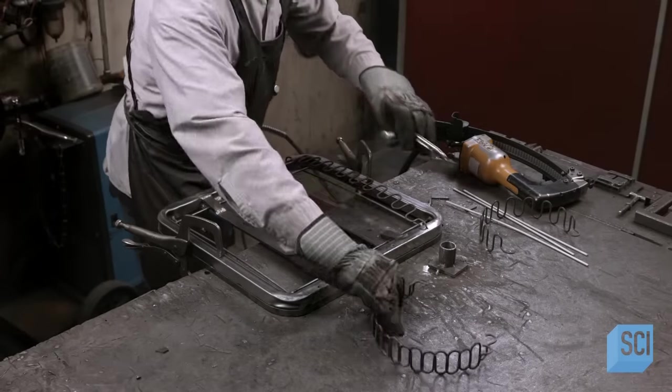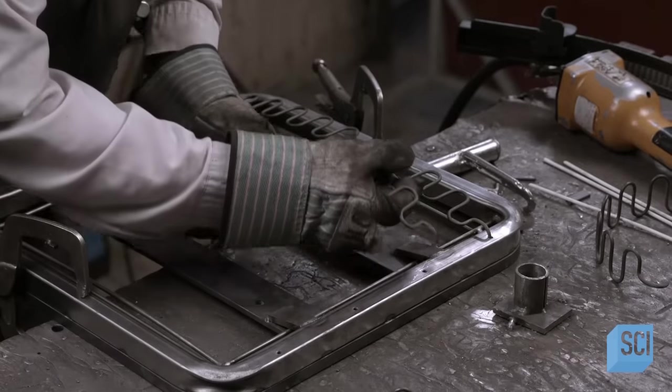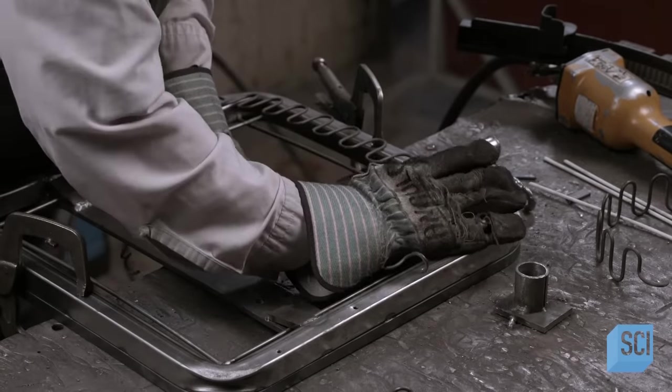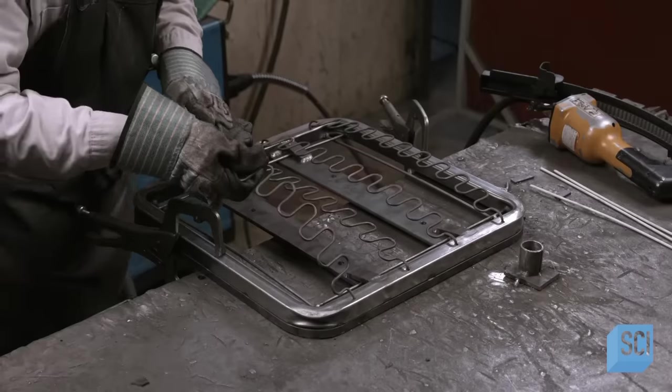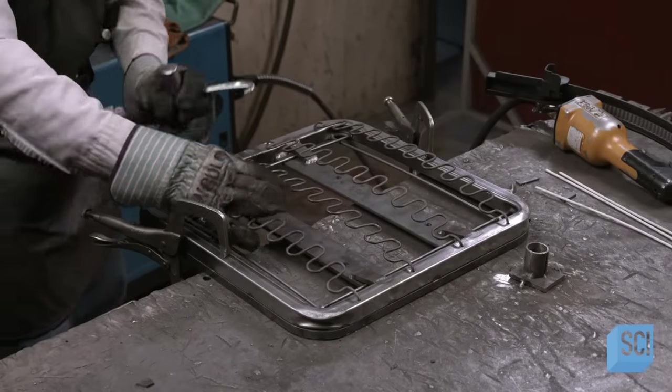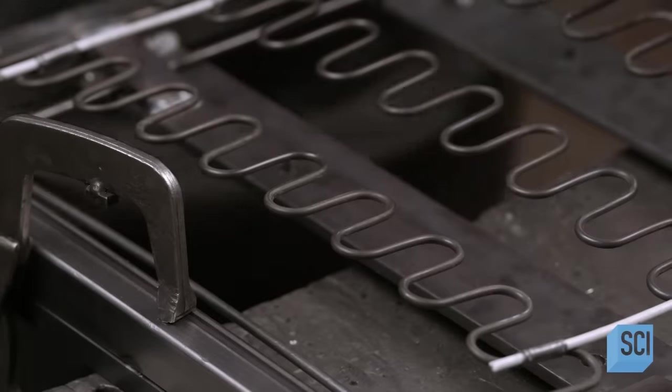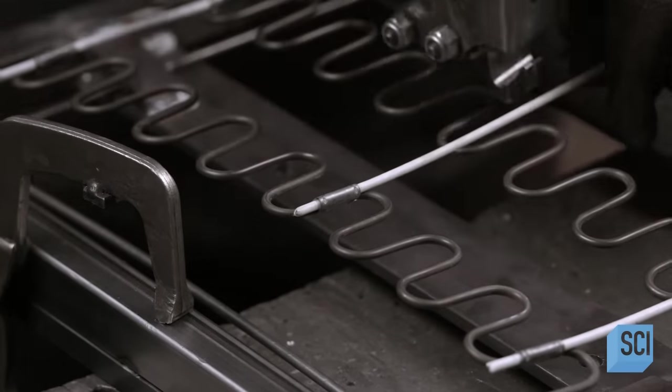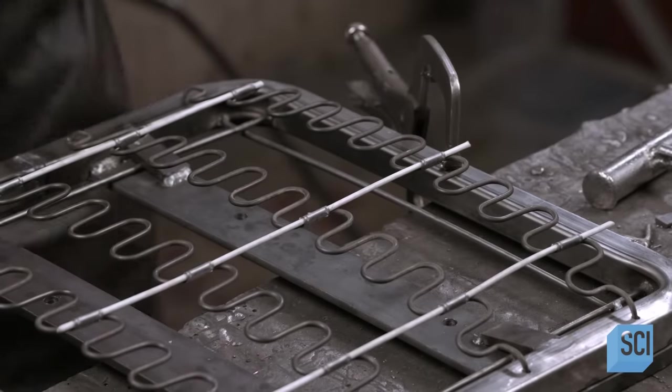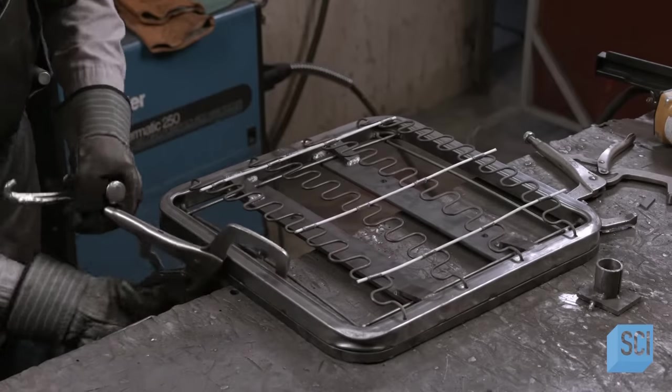He hooks S-shaped steel springs from the front to the back of the seat frame. These sinuous springs will eventually provide a flexible web of suspension in the seat. He positions the rods laterally and clips them to the springs for additional stability and support. The office chair seat frame is now complete.